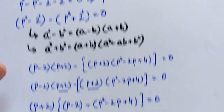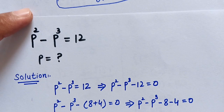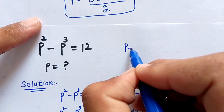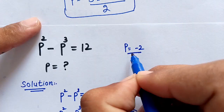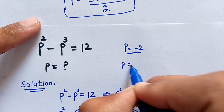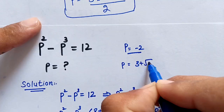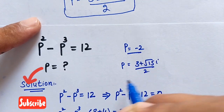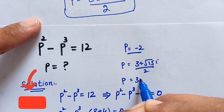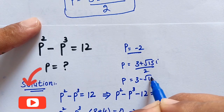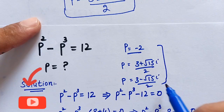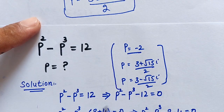So the answer of this question is: p equals minus 2, which is the real solution. The two complex solutions are p equals 3 plus square root of 15 i, divided by 2, and p equals 3 minus square root of 15 i, divided by 2. Thank you for watching, please subscribe to the channel. Thank you, bye bye.